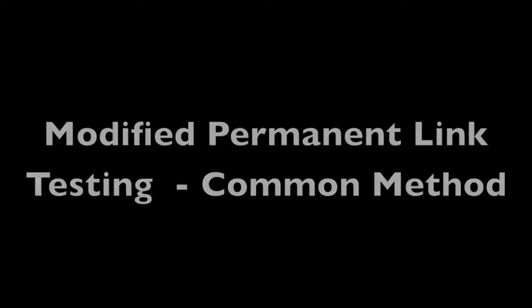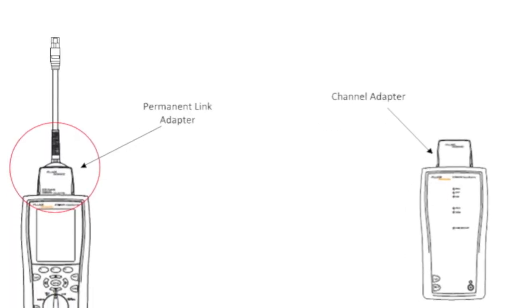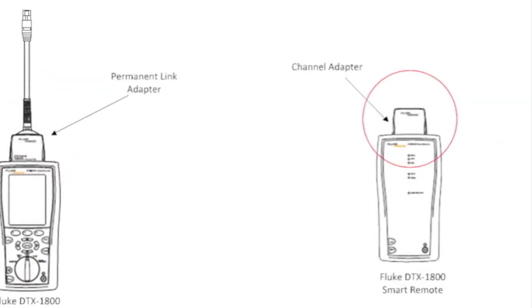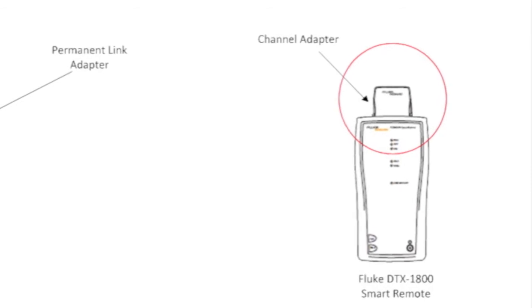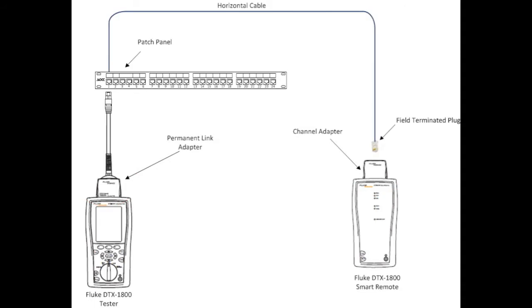Since the direct-attached topology is not recognized by the TIA, a modified permanent link configuration has become the de facto standard in the industry. The modified permanent link utilizes a permanent link adapter at the patch panel and a channel adapter at the field-terminated plug, which is the far-end connection. While this test method has been recommended by some vendors and has become common practice among installers in the field, the results may not be representative of actual performance.